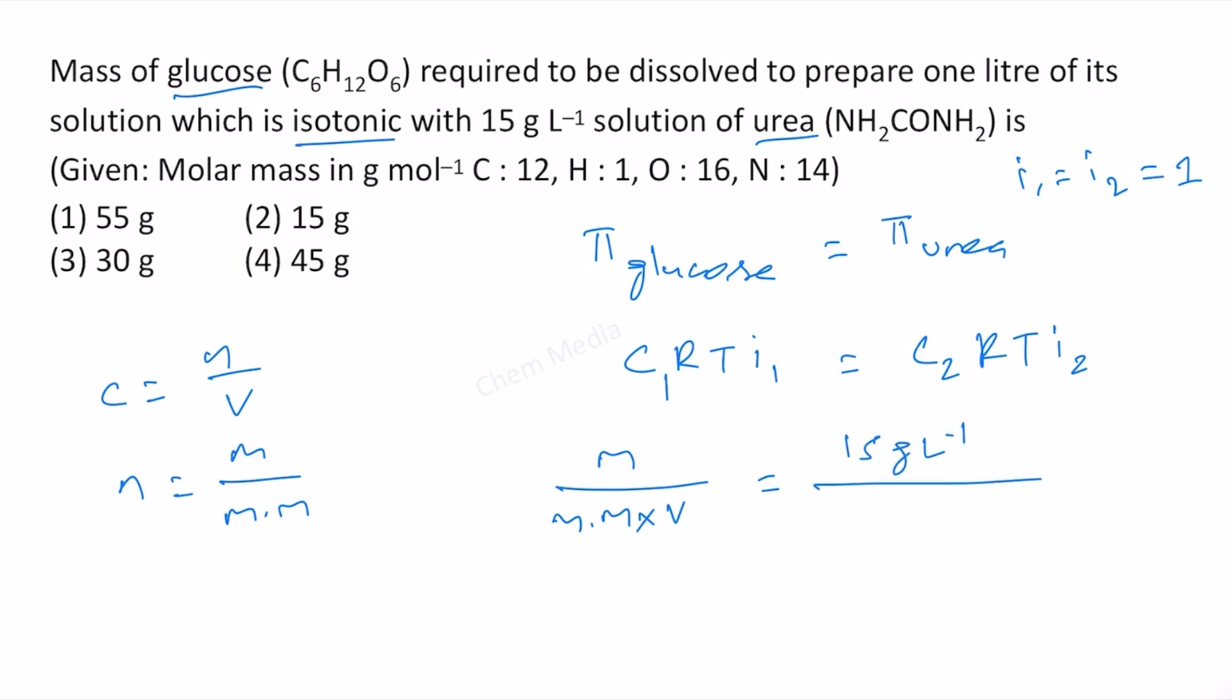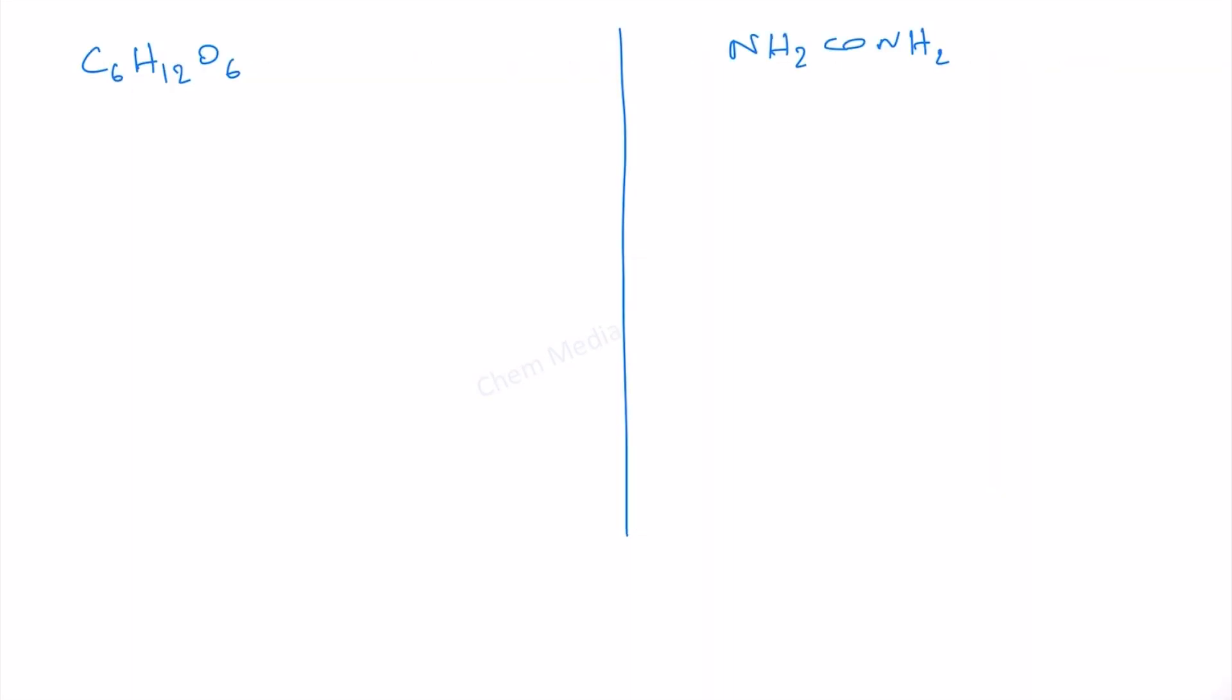Let us calculate the molar mass of glucose first. Carbon: we have 6 carbon atoms, so 6 times 12, that is 72. 12 hydrogen atoms, so 12 times 1, 12. Oxygen atoms: we have 6 oxygen atoms, so 6 times 16, and that is equal to 96. Therefore this is 180 gram per mole.